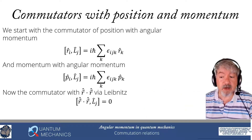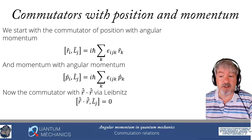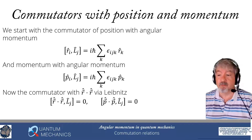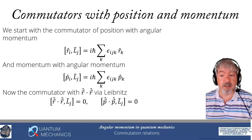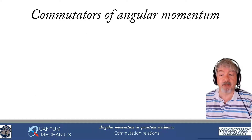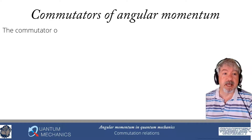We can do the same thing with p². Because p is a vector operator just like r, we can immediately conclude that the commutator of p² with Lj is also equal to zero. We now have everything we need to calculate the commutator of angular momentum with itself.